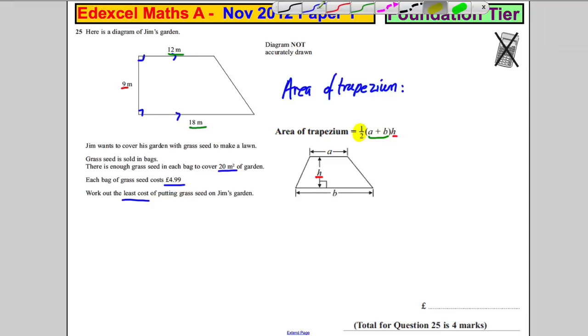So the area of the trapezium in this case, let's do it. Well, it would be a half multiplied by 12 plus 18. And 12 plus 18 is 30 multiplied by the height, which is equal to nine. Now a half times 30 is 15. So we're doing 15 multiplied by nine.